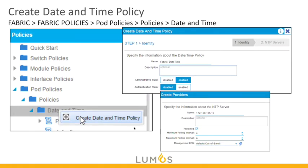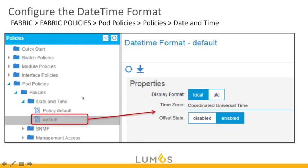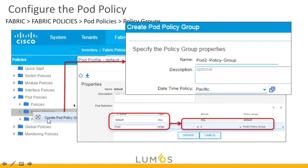Create a date and time policy: give it a name, set administrative state to enabled, optionally configure authentication, add NTP servers with a polling interval, and specify which VRF or management EPG to use. Then set the format — local or UTC — and configure any offset. Create a pod policy group, give it a name, and pick the date and time policy. In ACI 2.0, you can have more than one pod — perhaps in different data centers with different NTP servers — so you can create pod selectors for each.